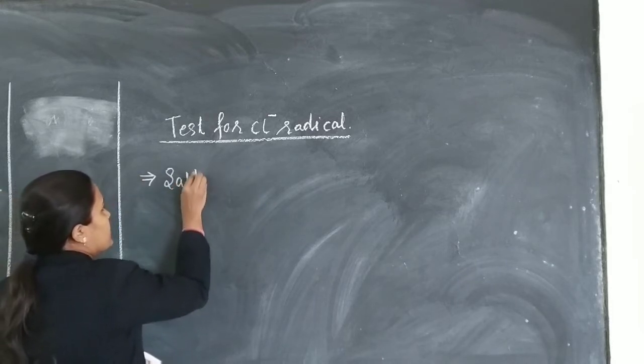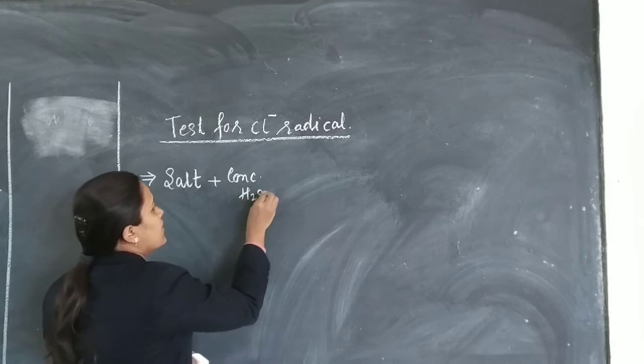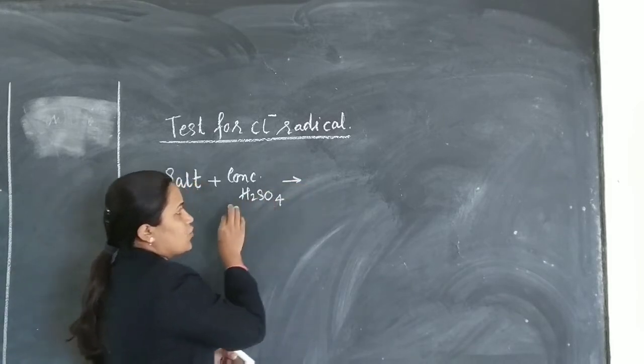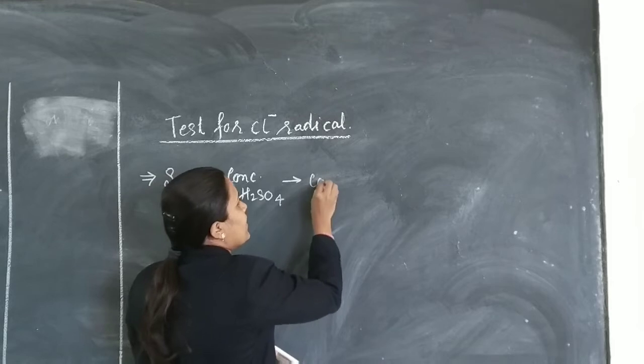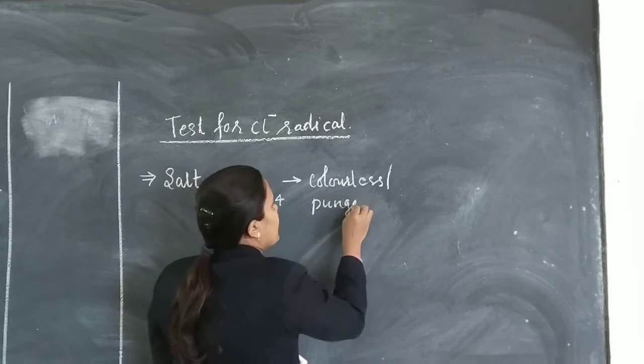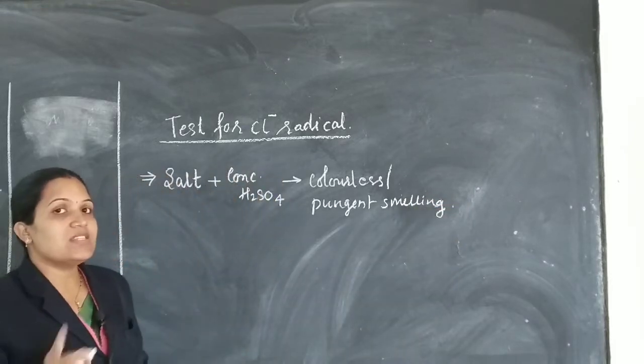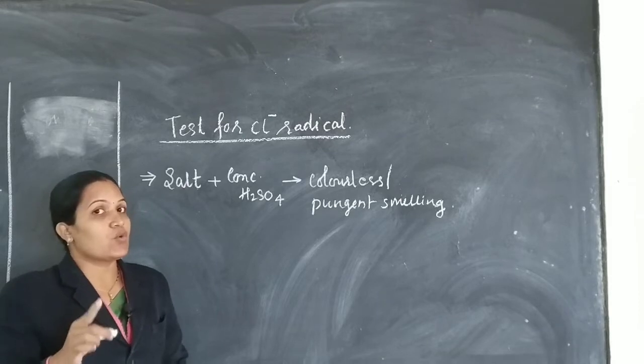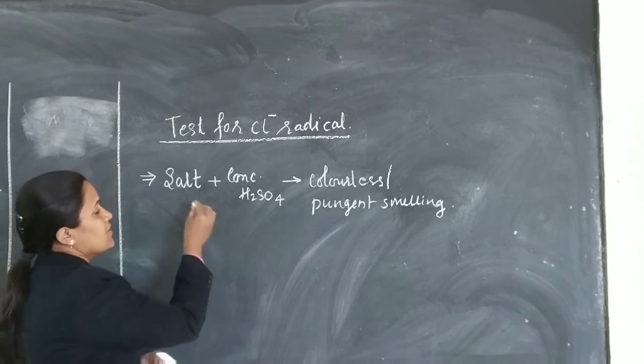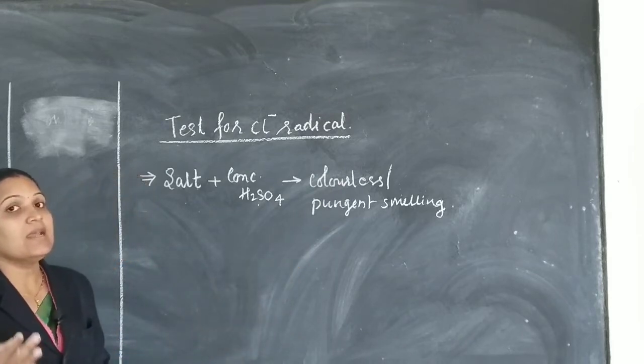First step: take salt and add few drops of concentrated H2SO4. When you add a few drops of concentrated H2SO4, then you will observe colorless pungent smelling gas. If you observe a colorless pungent smelling gas, then you will say that gas is actually HCl. You have to remember that salt plus concentrated H2SO4 releases colorless pungent smelling gas. And this is called Indicatory Test.